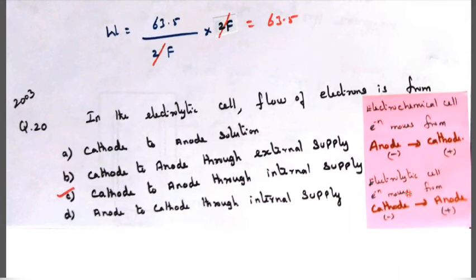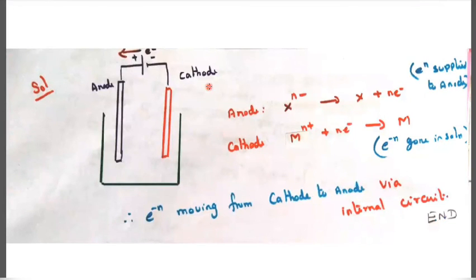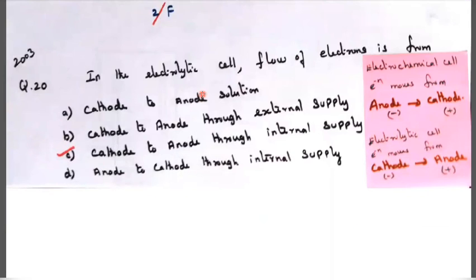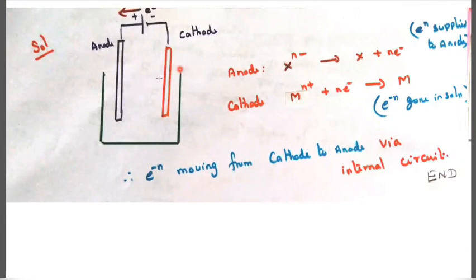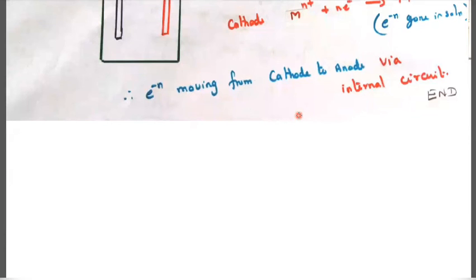We could not fix it - always in electrolytic cell cathode is minus. In electrolytic cell, cathode is minus. In electrochemical cell, cathode is plus. If you understand this concept, we can easily do it. In the electrolytic cell, the electron moves from cathode to anode is the correct answer, C answer. Here cathode is minus, anode is plus. Anode: X to the power N minus gives X plus N number of electrons. Cathode: M N plus gains N electrons gives M. Electron supplied to the anode, electron goes in solution. The electron moves from cathode to anode via internal circuit. Thank you students.